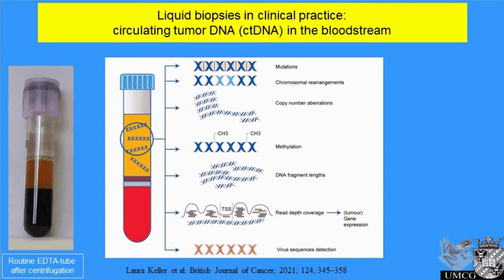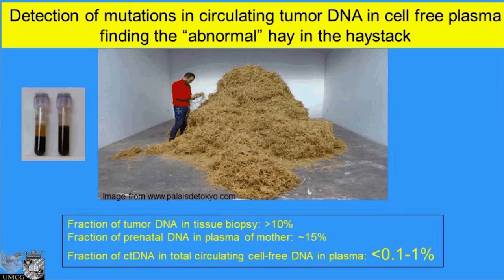However, there are some differences in doing this testing on plasma versus tissue. I would like to share three which are quite essential. First, if we look at the amount of circulating tumor DNA compared to the total amount of DNA in the plasma fraction, that is less than 1% in most cases. In many cases it's even less than 0.1%. So the amount of tumor DNA is present in a very large background of other DNA — that's challenge number one.